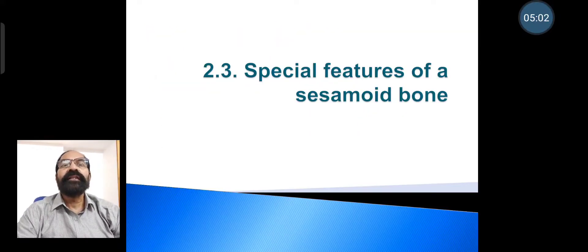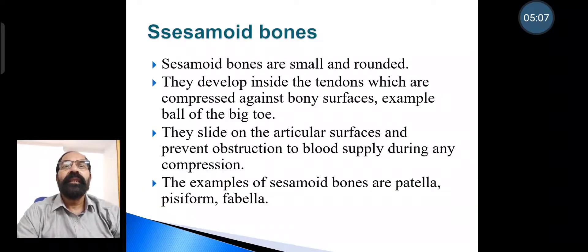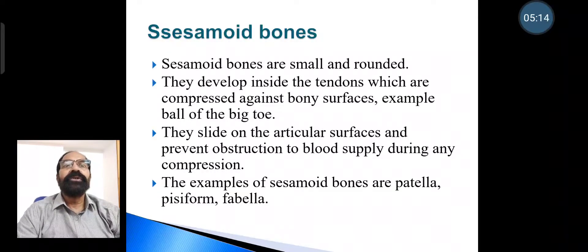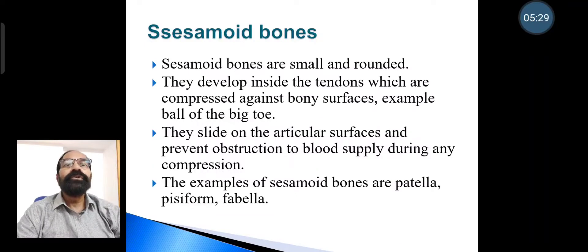Next are the special features of sesamoid bones. Sesamoid bones are small and rounded, and they develop inside the tendons which are compressed against bony surfaces. For example, the ball of the big toe. They slide on articular surfaces and prevent obstruction to blood supply during any compression. Examples of sesamoid bones include the patella, the pisiform, and the fabella.